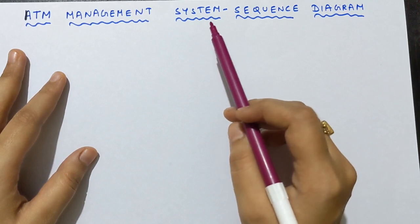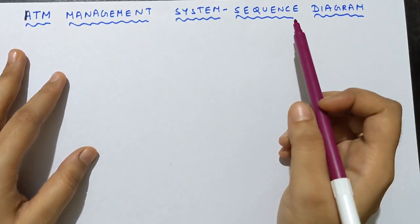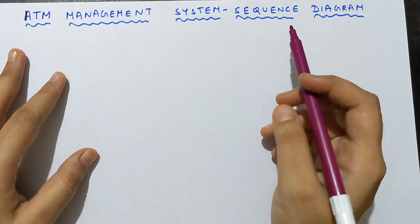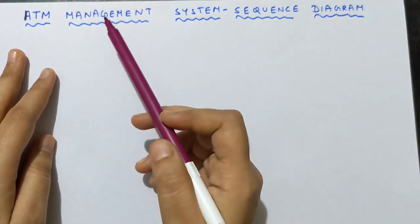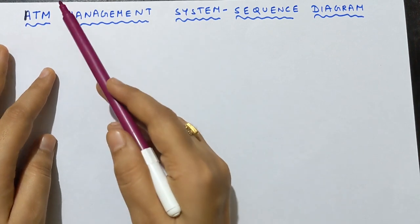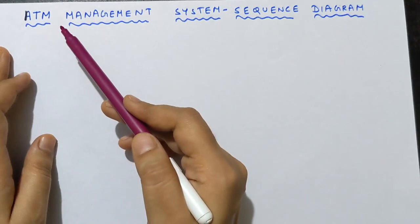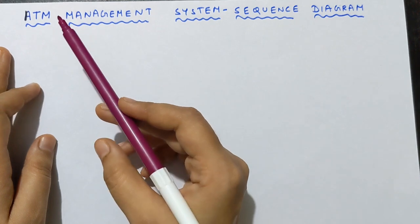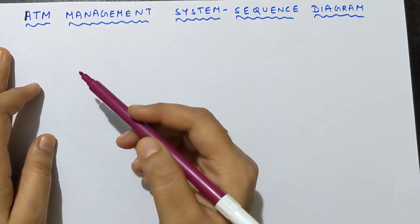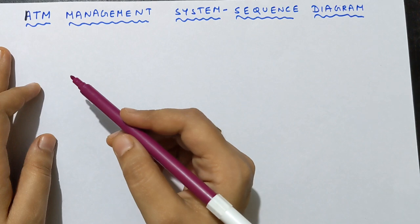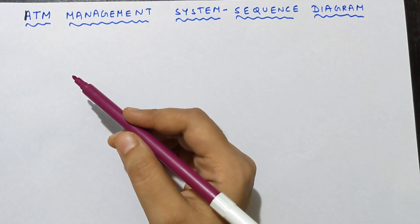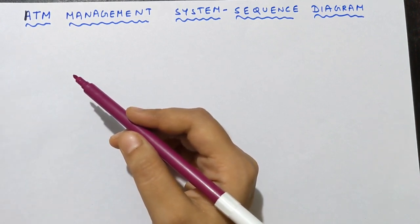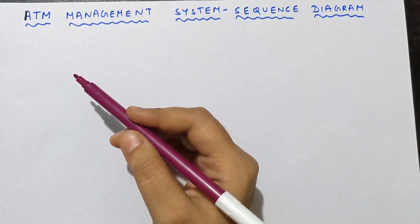The first step in drawing a sequence diagram is we need to find the multiple objects for the diagram. The topic is ATM management system, so things related to ATM can be called objects. ATM itself can be an object. Next, if ATM has to exist, definitely a bank should be there — only if banks are there can ATM exist. So bank can be an object.